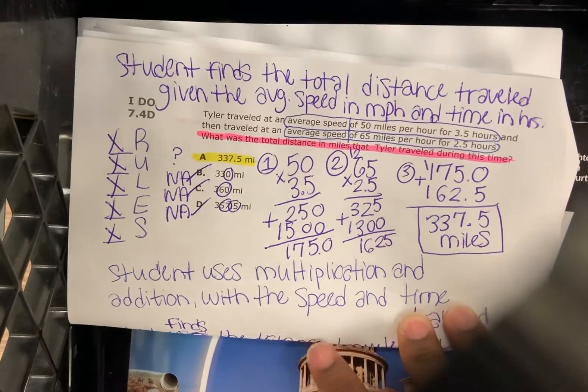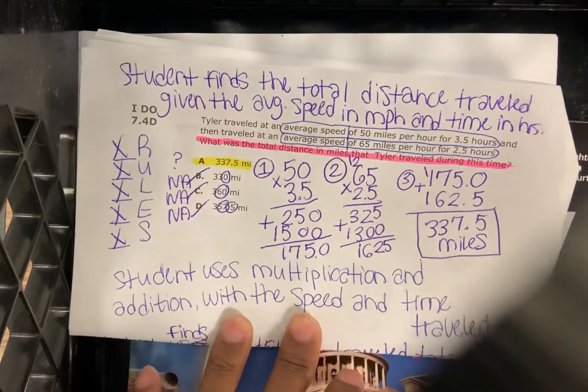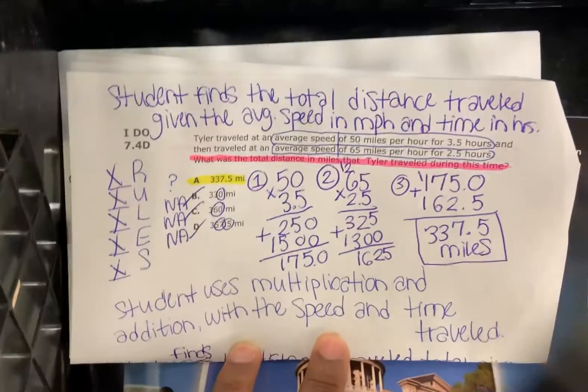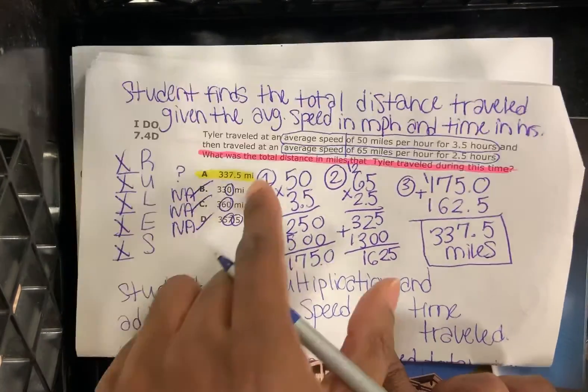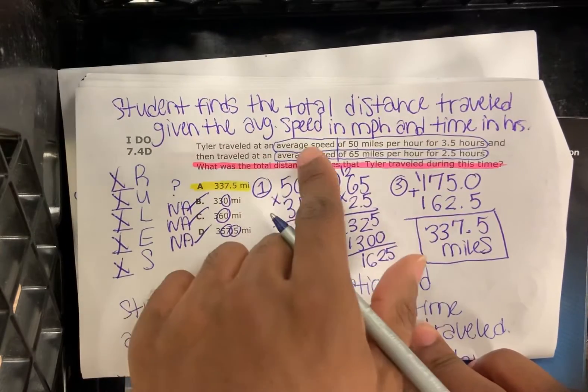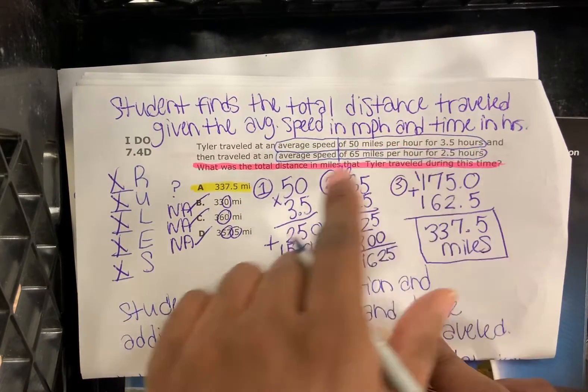Alright, I do 7.4D. The student finds the total distance traveled given the average speed in miles per hour and time in hours.